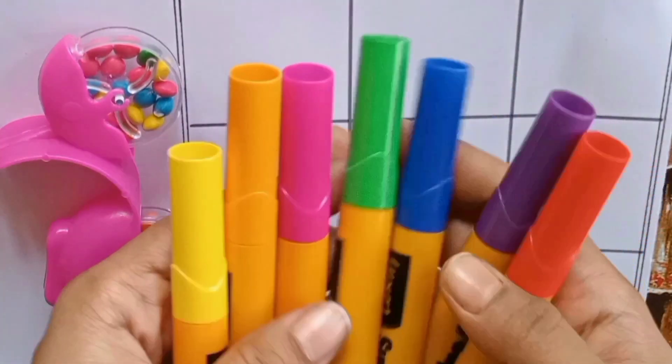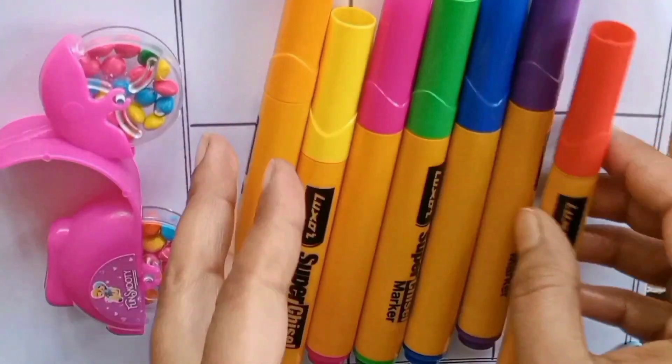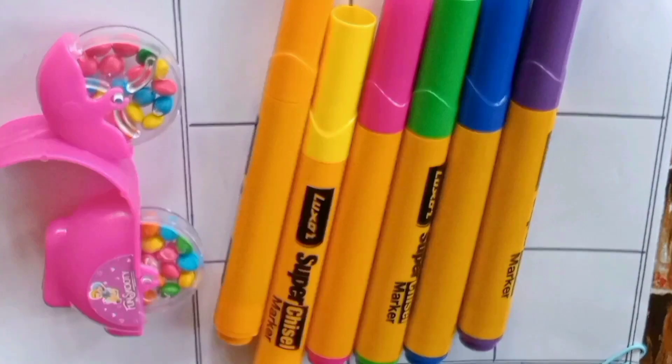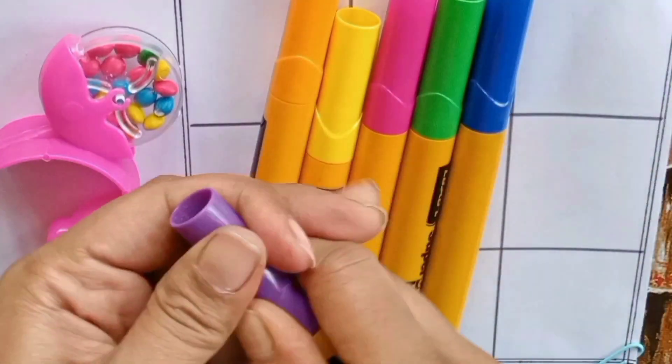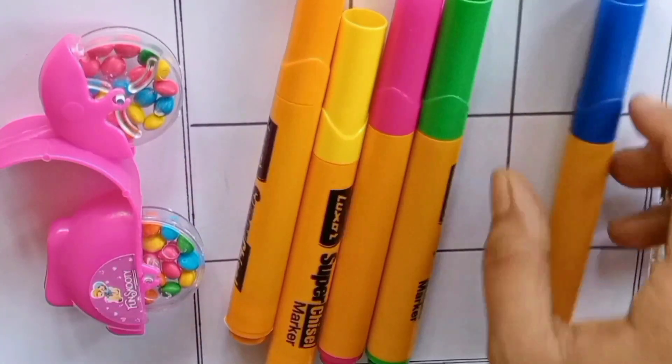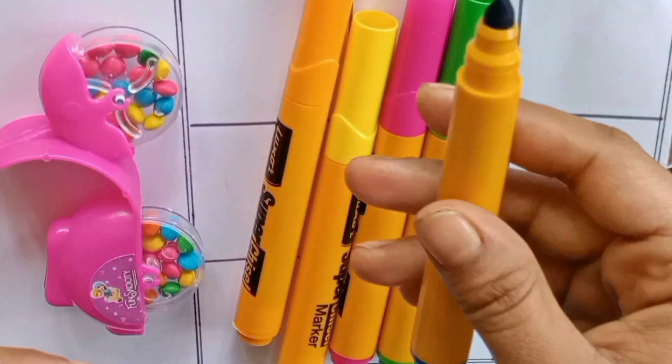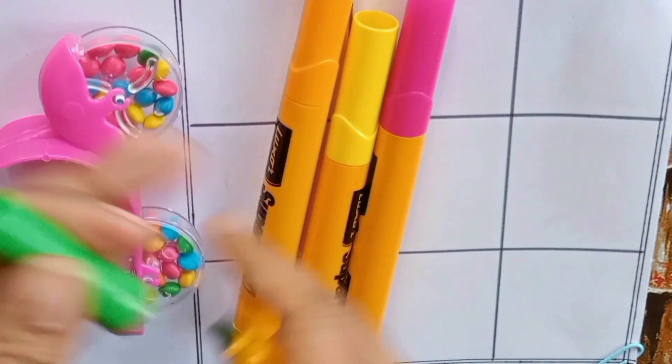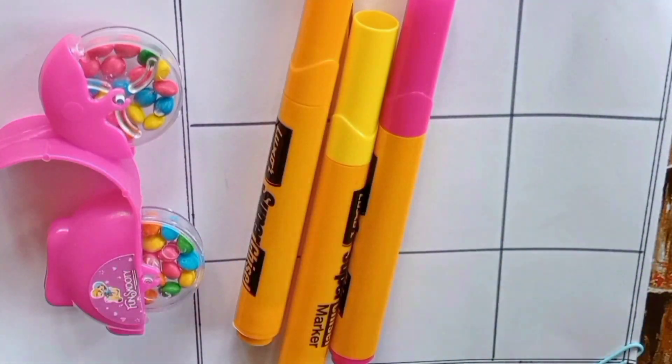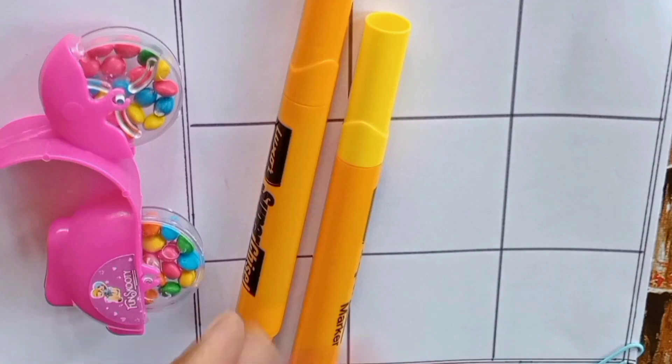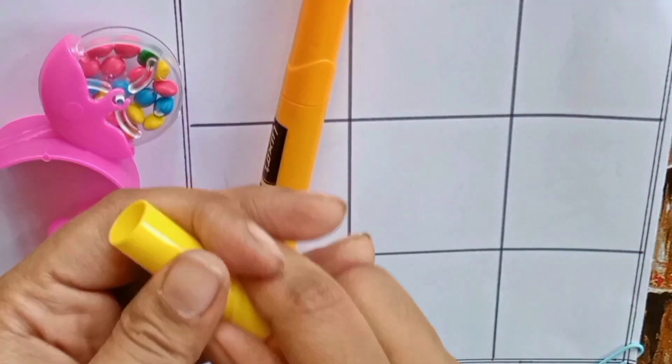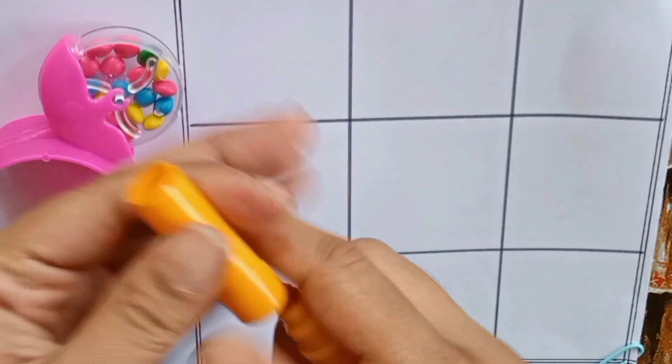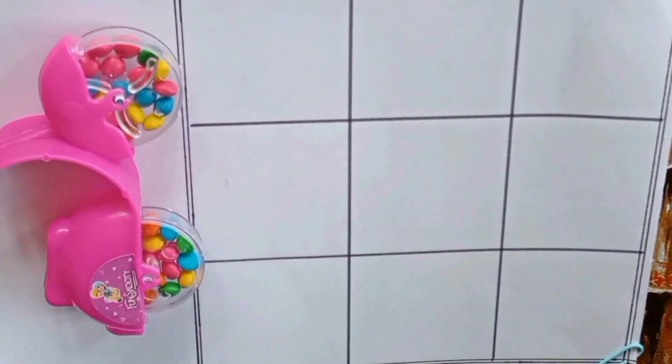Oh wow, color pens! So many colors. Let's learn the colors: Red, Purple, Blue, Green, Pink, Yellow, and our last color is Orange. Today we will learn numbers.